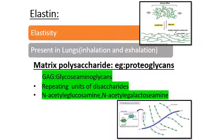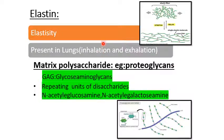The next major important protein involved in cell-to-matrix interaction is elastin, which helps in the stretching and relaxing of muscles. For example, in the lungs when you inhale or exhale there is stretching and relaxation. Another example is when you pinch someone's cheeks and release, it comes back to the same position — this is due to the presence of the elastin protein.